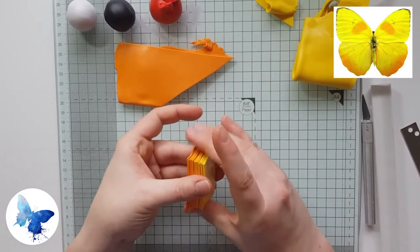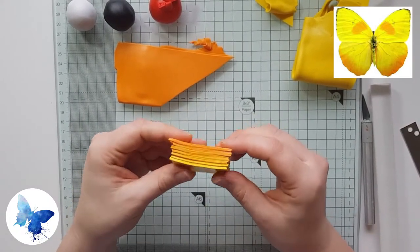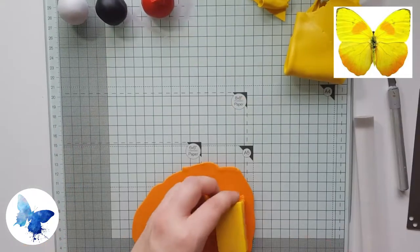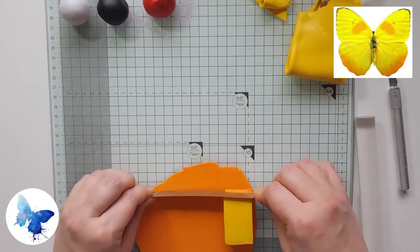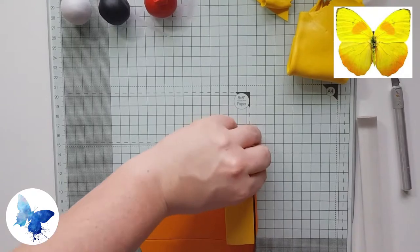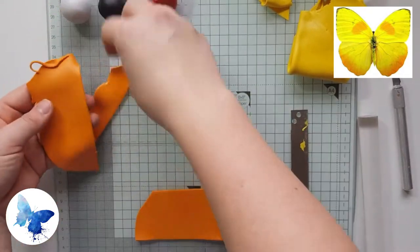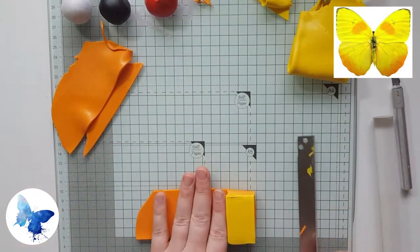Once you've stacked all the pieces you should end up with a block that looks something like this. Now I wanted some extra orange on the bottom so I'm just putting some more squares on the bottom using a scrap of orange that we have left from the Skinner blend.